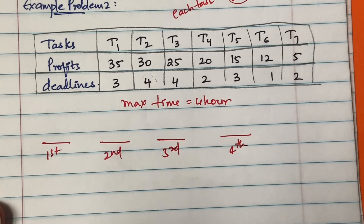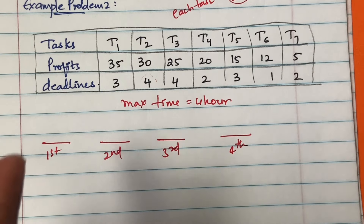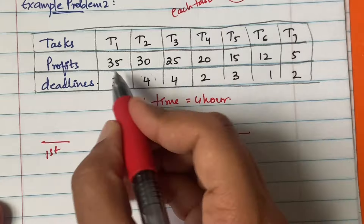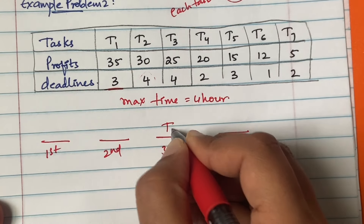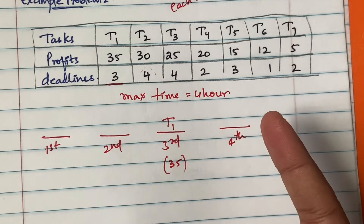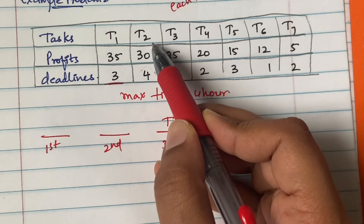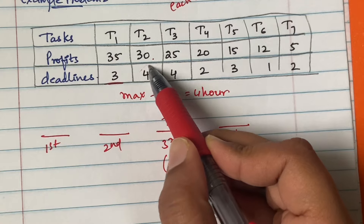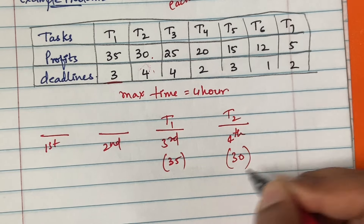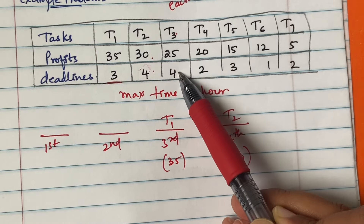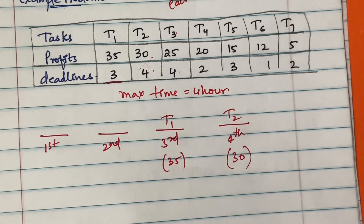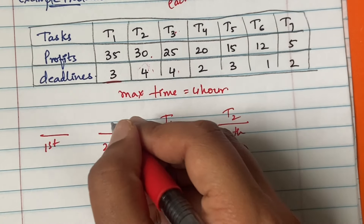First, identify the task with the highest profit — that is t1 with a profit of 35 and a deadline of three hours. Place t1 in the third slot. Next, t2 has a profit of 30 and a deadline of four hours, so place it in the fourth slot. Then t3 has a profit of 25 and a deadline of four hours, but the fourth slot is taken and the third slot is also taken, so place t3 in the second slot.